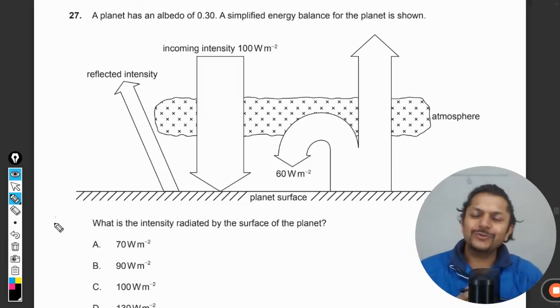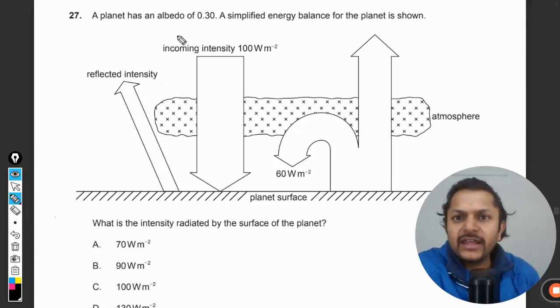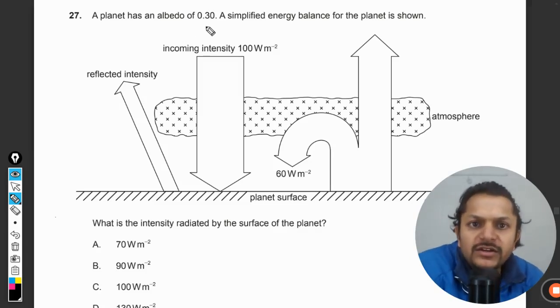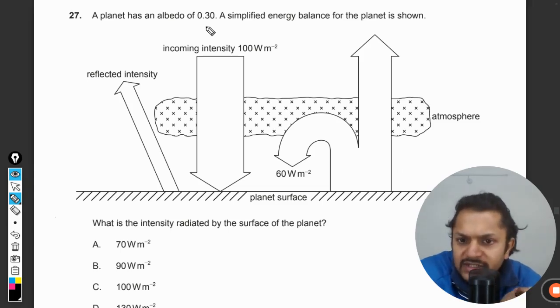Okay dear students, let us see what is there in this question. A planet has an albedo of 0.3. The simplified energy balance for the planet is shown. What is the intensity radiated by the surface of the planet?